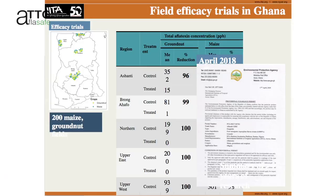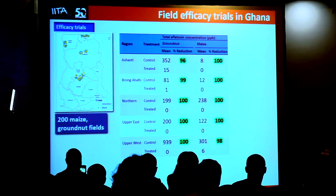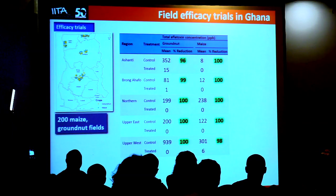These are the results. In the different regions, crops that were not treated contained very unsafe aflatoxin concentrations, up to 900 parts per billion. These are summaries of 30 to 40 fields in each region. In comparison, the treated ones in most cases had zero aflatoxin. The reductions detected were from 96% to 100% in this specific year. It worked for both groundnut and maize. There are not many technologies that can reduce a problem the way Aflasafe does.